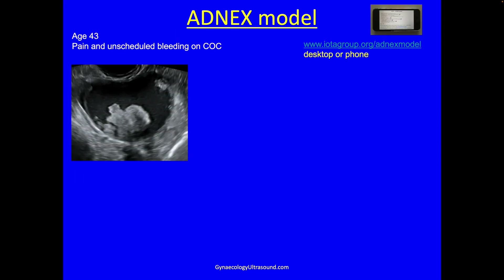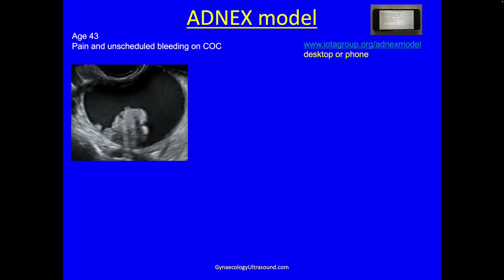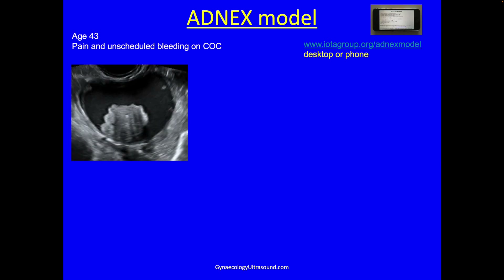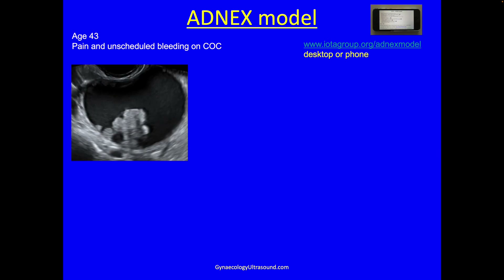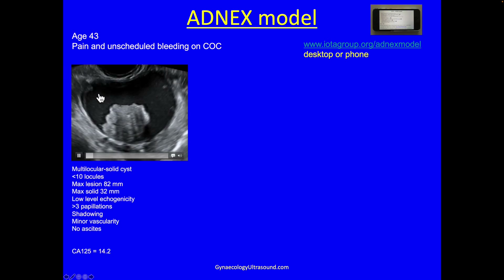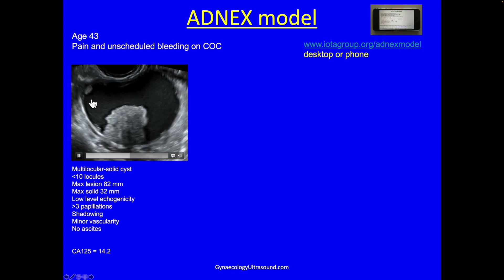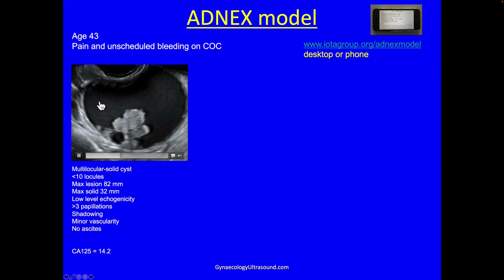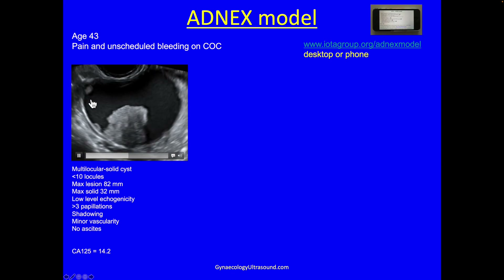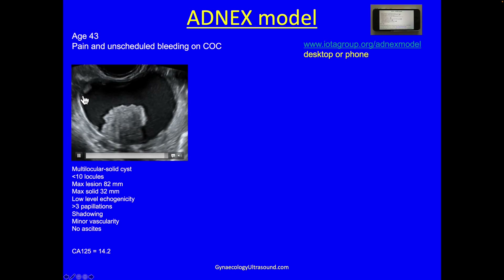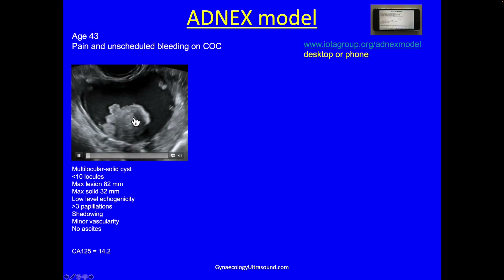In this example, the patient is 43. She came with pain and unscheduled bleeding on the pill. This is a video clip of one of her ovaries. Describing it using IOTA language: it's multilocular solid — there's more than one locule and a solid component. Fewer than 10 locules — I can see two. The maximum diameter of the lesion was 82 millimeters and the maximum solid component was 32.